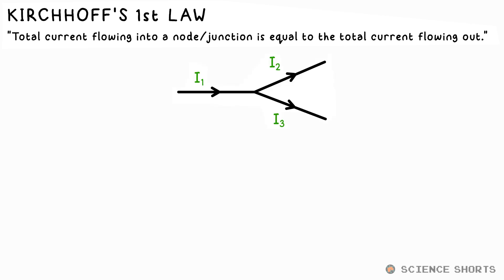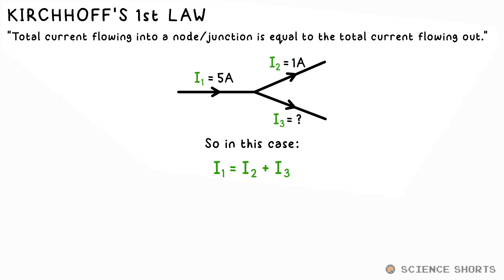When three or more wires meet there will be current flowing in and out. If we know which way the current is going in each wire, we can just equate the currents in and currents out. So in this case I1 equals I2 plus I3. So if I1 is 5 amps and I2 is 1 amp, that must mean I3 equals 4 amps.